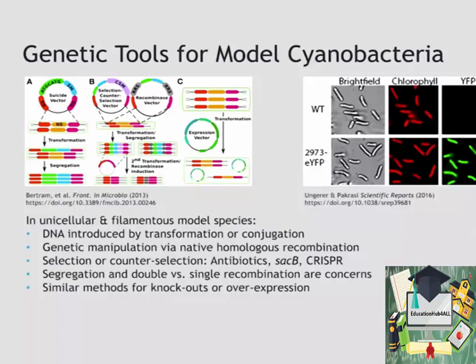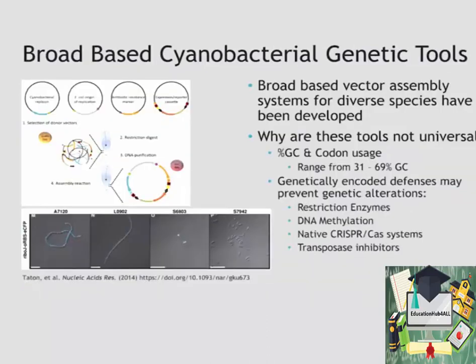Another way to manipulate cyanobacteria — part C of that left panel — is simply to put in a plasmid that is able to replicate within the cell. These kinds of manipulations can generate cells that are now able to express an exogenous protein such as YFP, which allows the cell to fluoresce under certain conditions when viewed under a microscope.